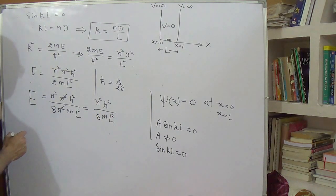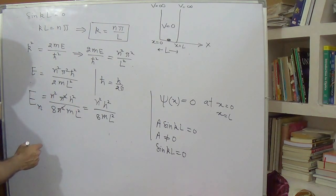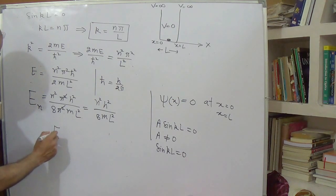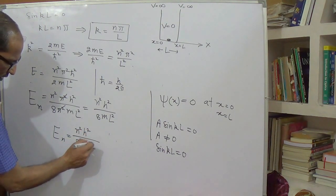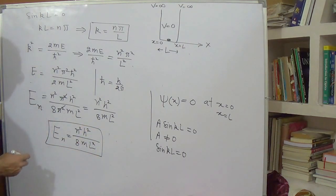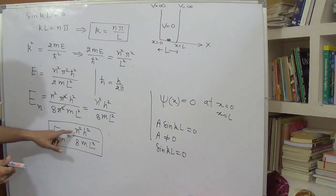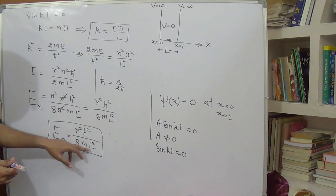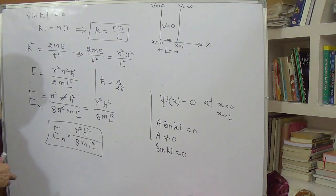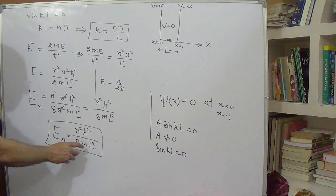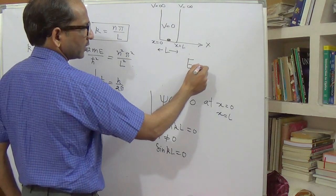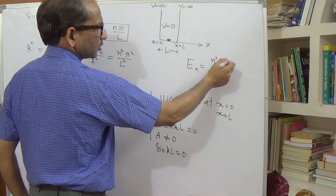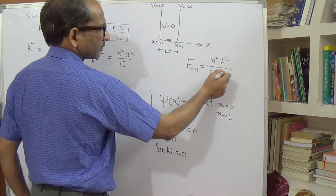This is the energy eigenvalue for any state n. The formula is Eₙ = n²h²/(8mL²), where energy is directly proportional to n² and inversely proportional to L². Here h and m are constants.